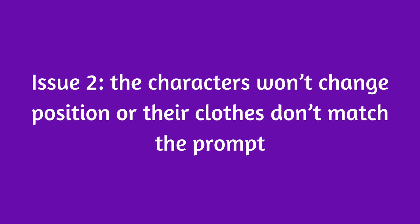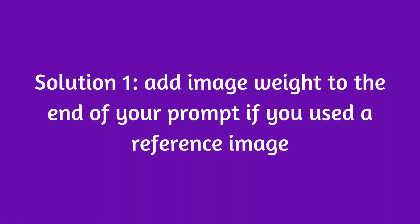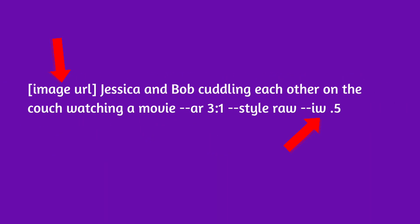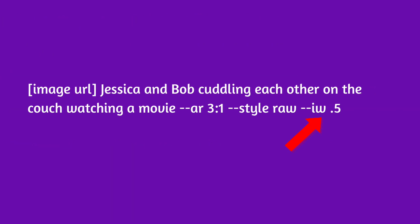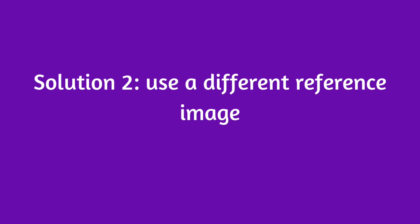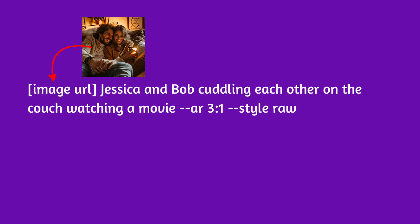Problem two: the characters won't change position, or their clothes don't match the modified prompt. There are two ways to fix this. First, add an image weight to the end of your prompt after adding the image URL. In mid-journey version 6, the image weight can range from 0 to 3, with a default of 1. Try dialing it down — start with a value of 0.5 — to give more weight to the prompt than the image. If that still doesn't work, try using a different reference image. Search for an image online or in mid-journey, for example 'couple cuddling on couch,' and copy that URL to the start of your prompt.